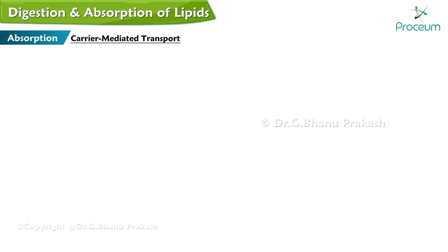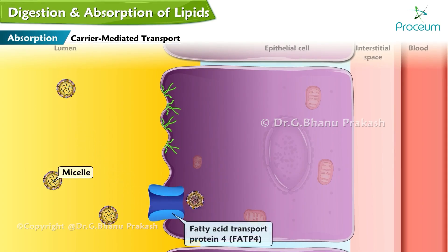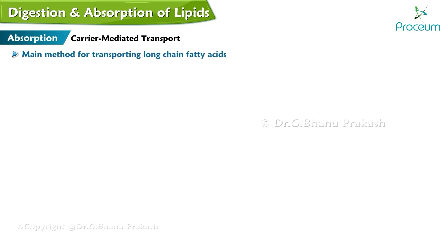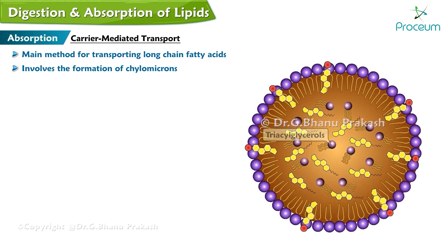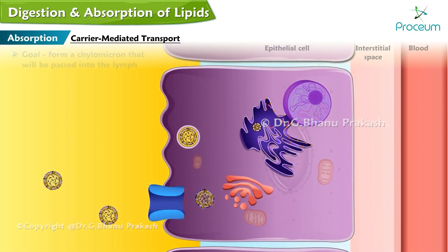Carrier-Mediated Transport: In the protein-dependent mechanism, multiple carrier proteins trigger engulfment of the micelle. Two such carrier proteins are fatty acid transport protein 4 and caveolin-1. This is the main method for transporting long-chain fatty acids and involves the formation of chylomicrons, which are composed of triacylglycerols, phospholipids, and cholesterol esters. Once inside the enterocyte, the goal is to form a chylomicron that will be passed into the lymph.